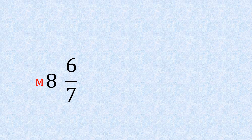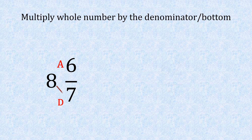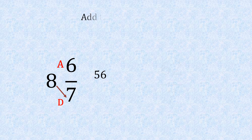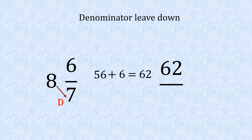Slightly bigger number here — let's get MAD. M-A-D. So we're going to multiply the whole number: eight times seven, giving us 56. Put it on the top line. Add the numerator to the top, giving us 62. And the denominator — we leave it down, just bring it across there. The answer is 62 sevenths.